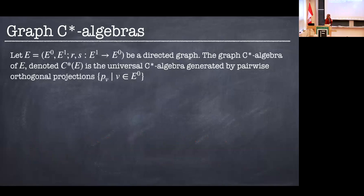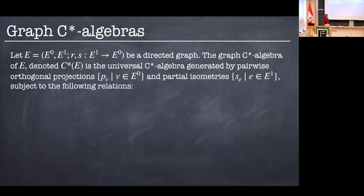Okay, so we take ourselves a directed graph, and we want to construct ourselves a C-Star Algebra from this. So how do we do this? Well, this is going to be the universal C-Star Algebra generated by projections for each vertex, and we want these to be pairwise orthogonal. And we also have a collection of partial isometries indexed by the edge set. And these are supposed to satisfy some relations that we read off from the graphs.